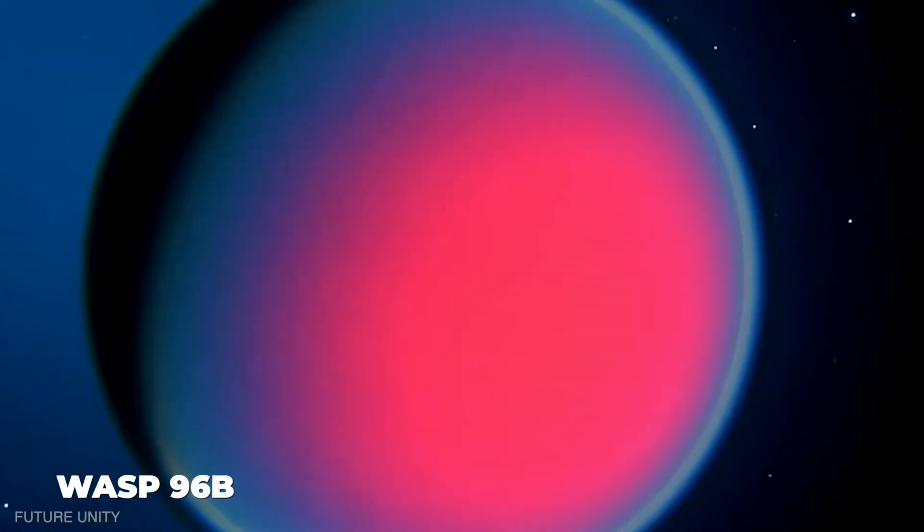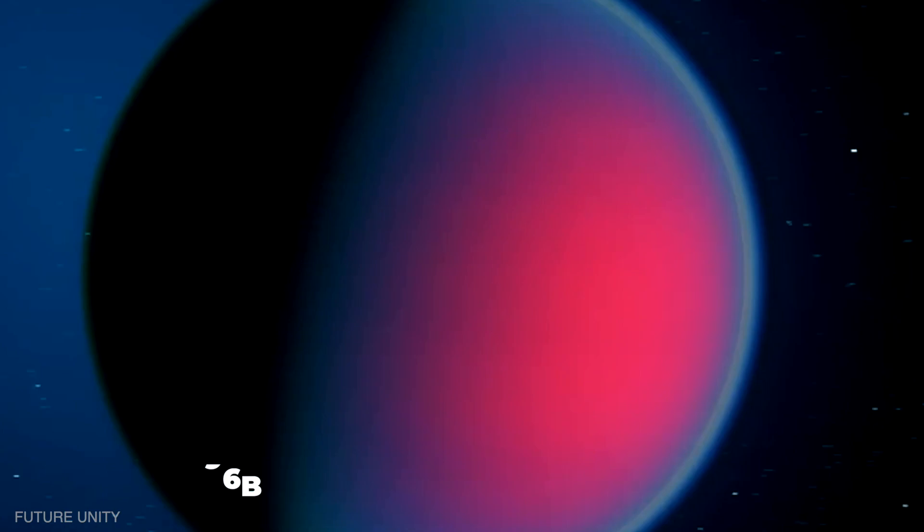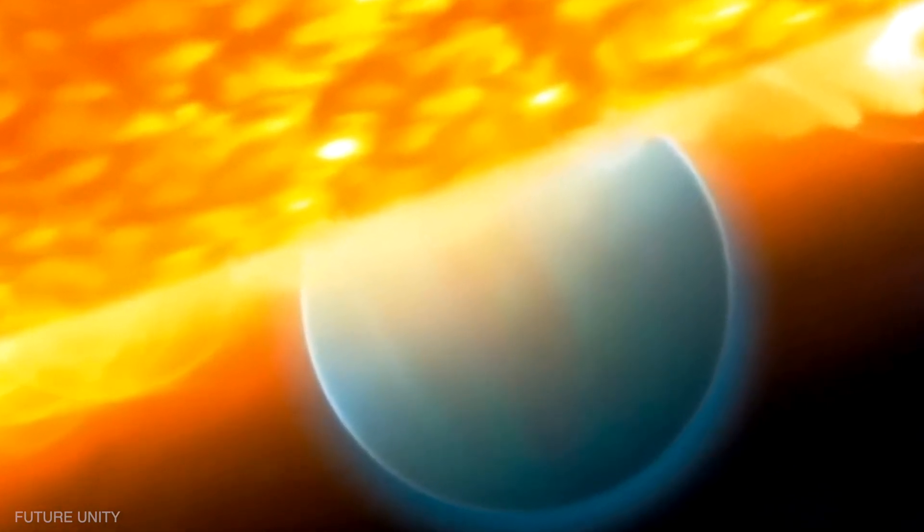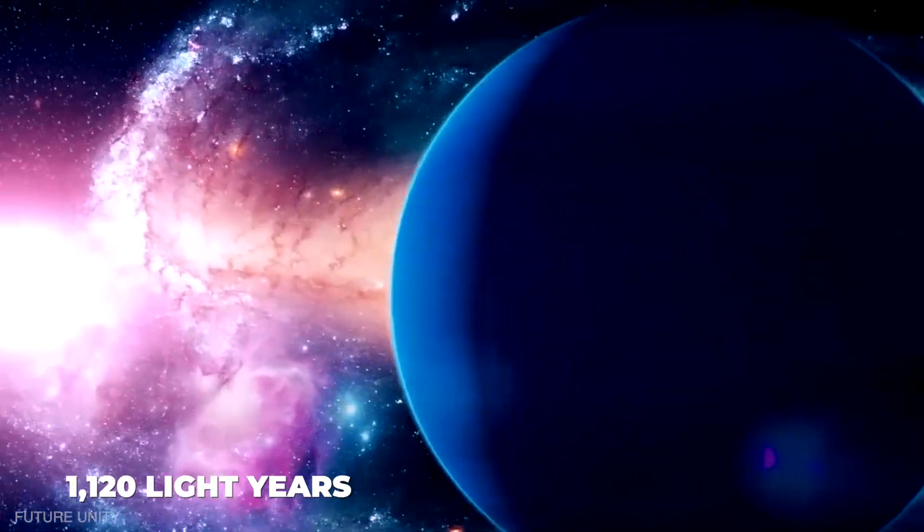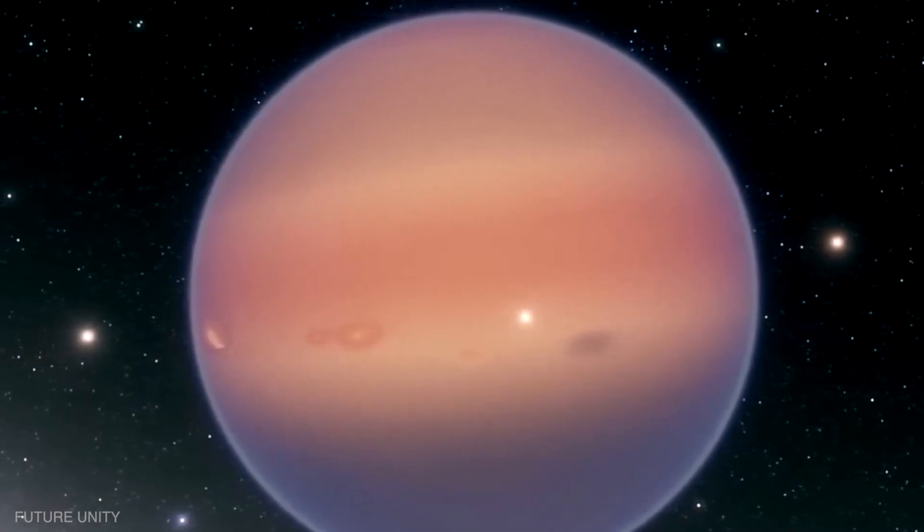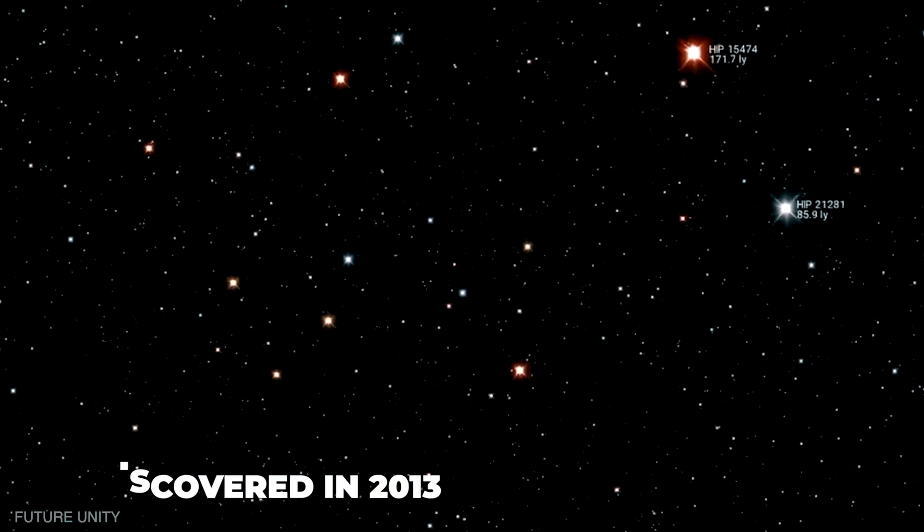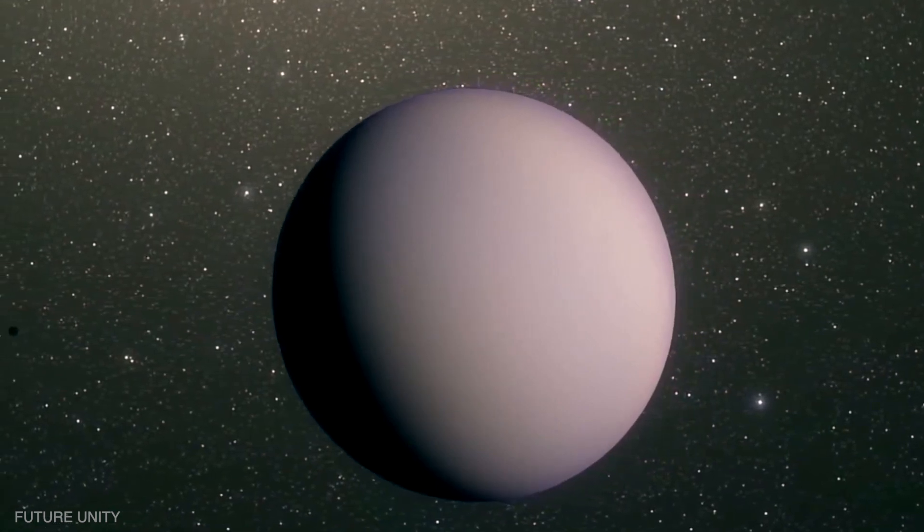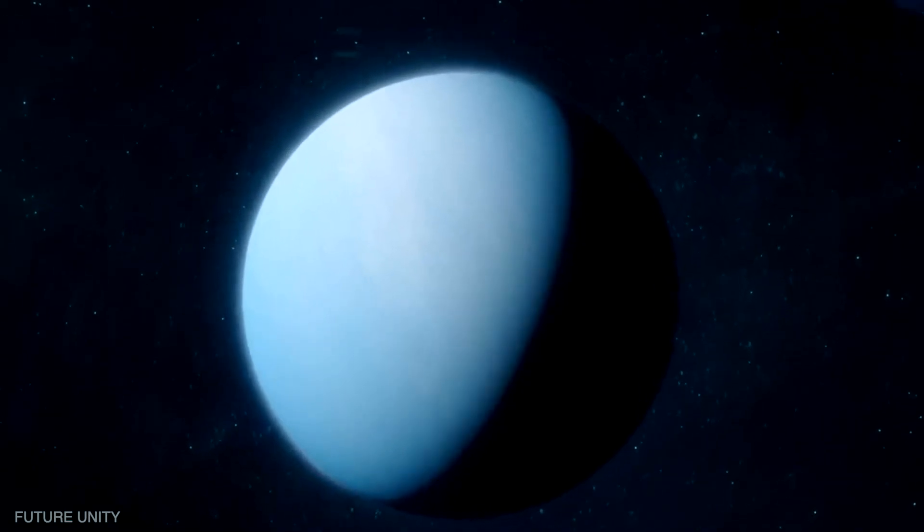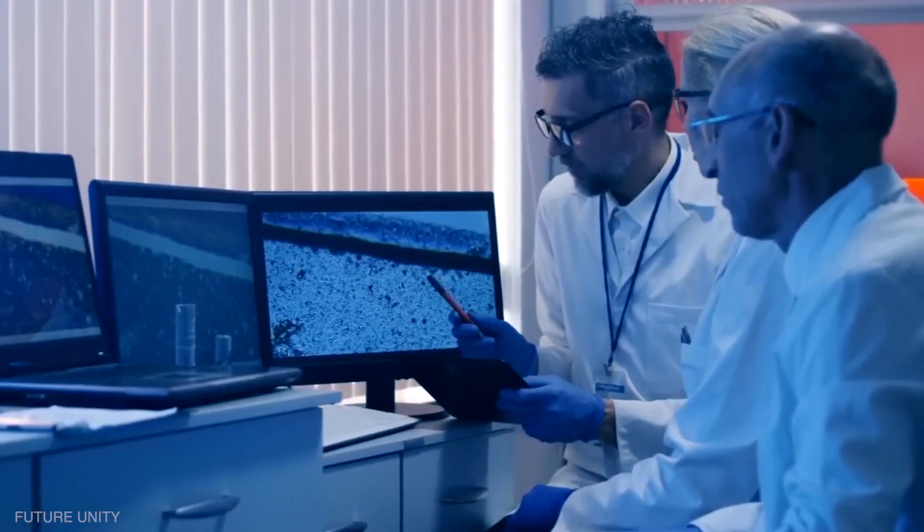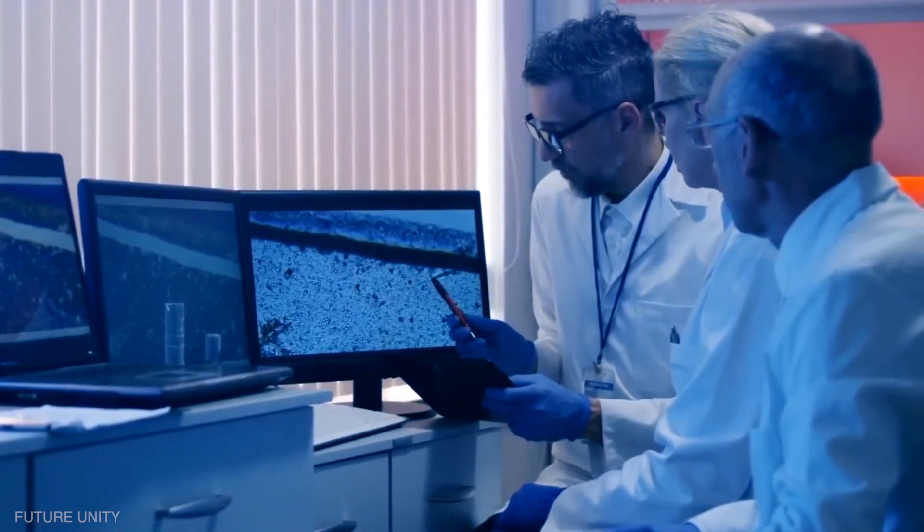WASP-96b is a gas-giant planet orbiting every 3.4 days around an 8 billion year old sun-like star, and is 1,120 light-years away from Earth. WASP stands for Wide Angle Search for Planet. It was discovered in 2013 under the WASP survey, but some features like the presence of clouds, haze, and water have not been observed at that time. Detecting water in its atmosphere will now persuade scientists to understand other exoplanets' atmospheres.